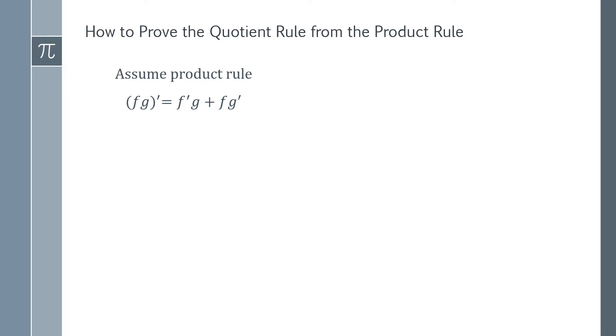The product rule tells you that for two functions f and g, the derivative of those two multiplied together is simply your derivative of function f multiplied by function g unchanged, plus function f multiplied by the derivative of function g. These dashes tell you that we mean the derivative.